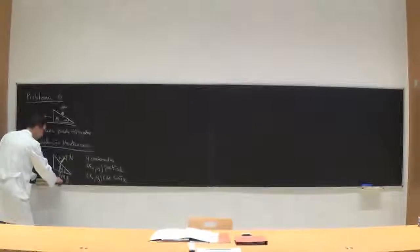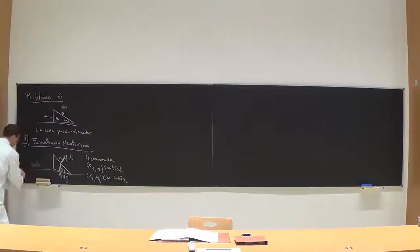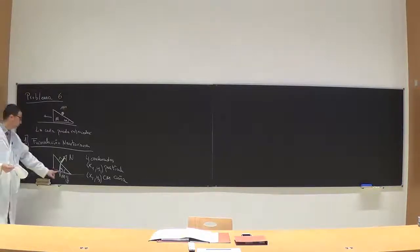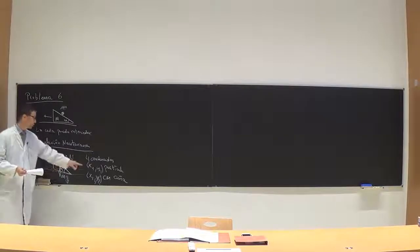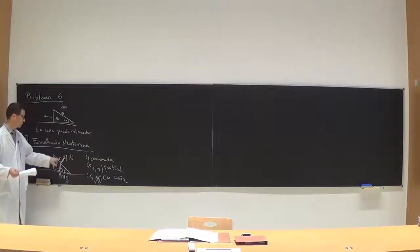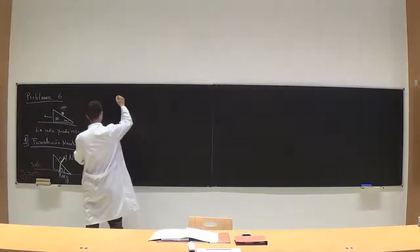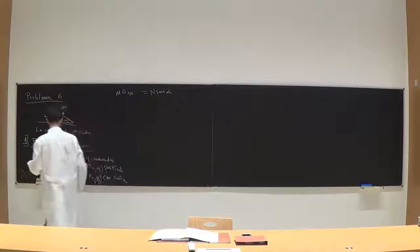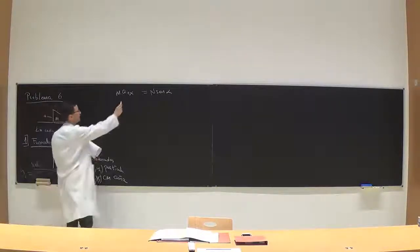Una de esas coordenadas nos la podemos quitar de inmediato con una ligadura trivial, que es el suelo. El suelo está fijo, así que y₂ es constante. La cuña no puede bajar del suelo, está apoyada sobre él. Hay una ligadura y una fuerza más que actúa sobre la cuña, pero me la quito directamente. Me quedo con tres coordenadas: la posición de la cuña en el plano y la posición vertical y horizontal de la partícula, que satisface otra ligadura porque la partícula no puede pasar el plano inclinado.